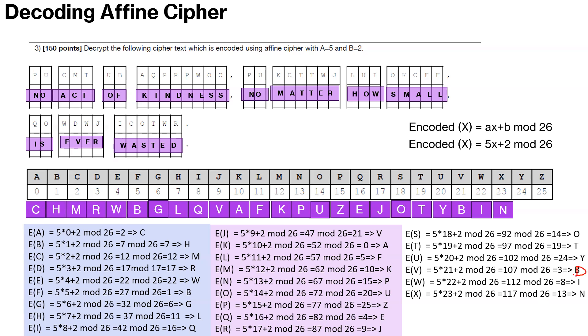Okay, so that's what it is. NO MATTER HOW SMALL IS NEVER WASTED. So I made a mistake here. V is supposed to be D, the third mapping to the third letter here which is D. If you can see D. Okay, so hopefully you learned something here. Thank you.